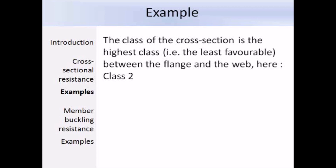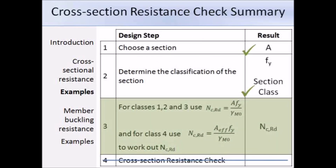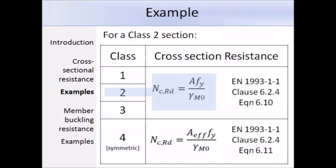Now that we know the yield strength and section class, we can work out the cross-section compression resistance. The section is class 2, so we use expression 6.10: N_CRd = A × F_Y / gamma_M0. Substituting in the area, yield strength of 355 N/mm², and gamma_M0 of 1, we get a cross-section compression resistance of 3,305 kN. If a design compression force had been given, we would compare that value to the resistance to ensure the resistance is greater than the design force.